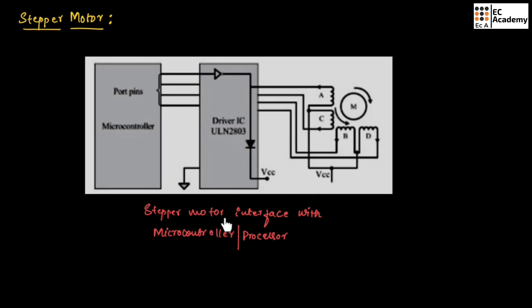This diagram shows the stepper motor interface with a microcontroller or microprocessor. The stepper motor is interfaced with the microcontroller through a driver circuit. The driver circuit is connected to the port pin of the microcontroller, and the stepper motor is connected to the driver circuit. We cannot directly interface a stepper motor to a microcontroller or processor — we need to use a driver circuit in between. This covers stepper motor, its types, different stepping modes, and the interface with microcontroller and processor.